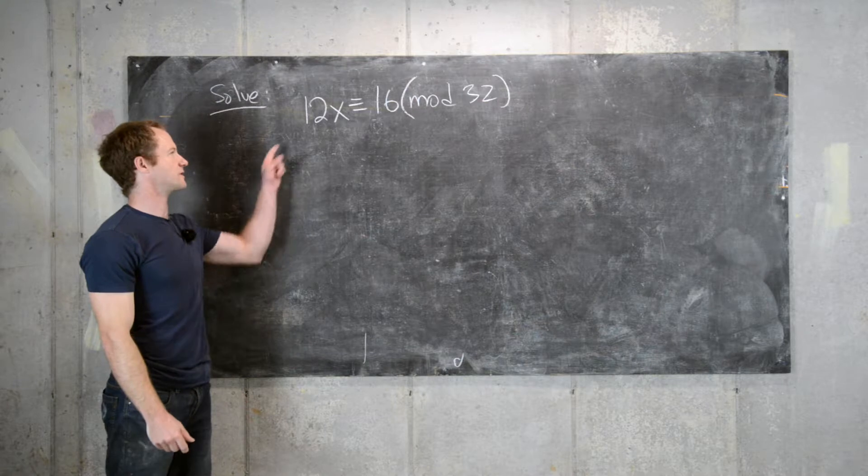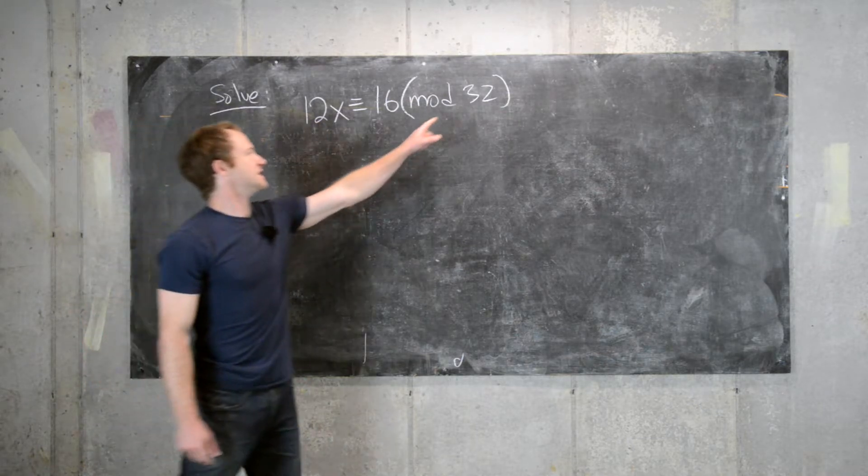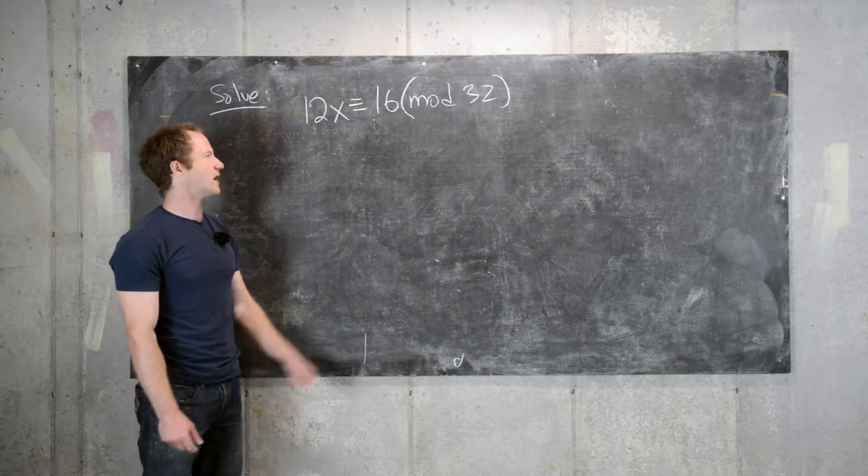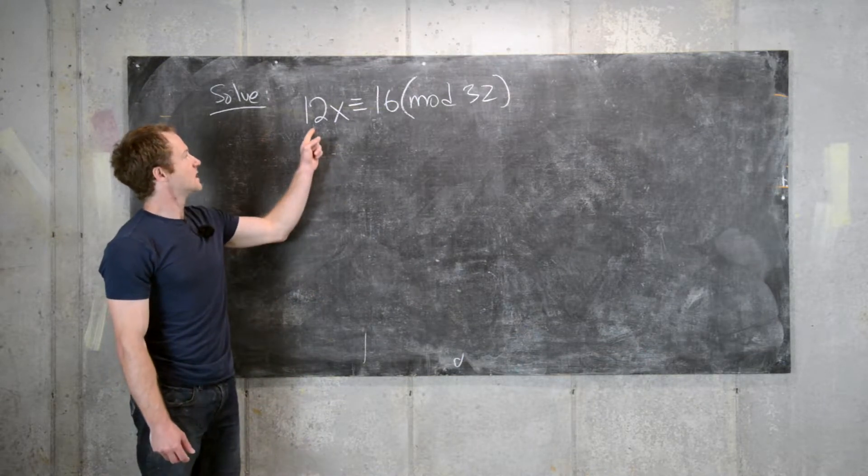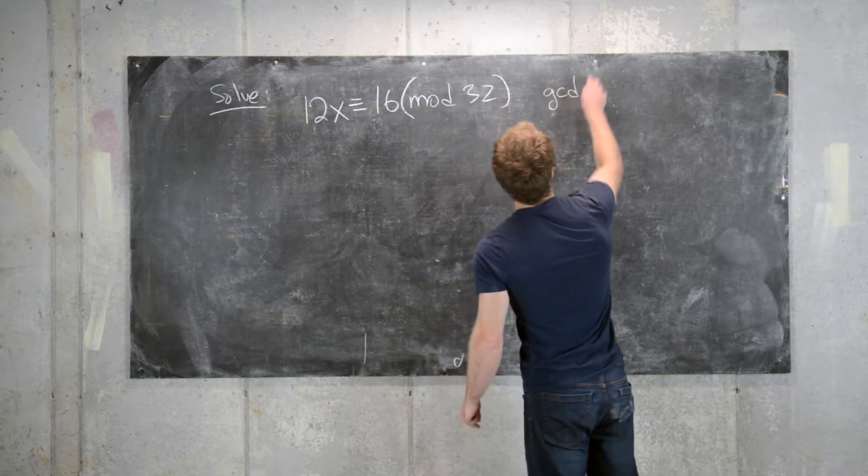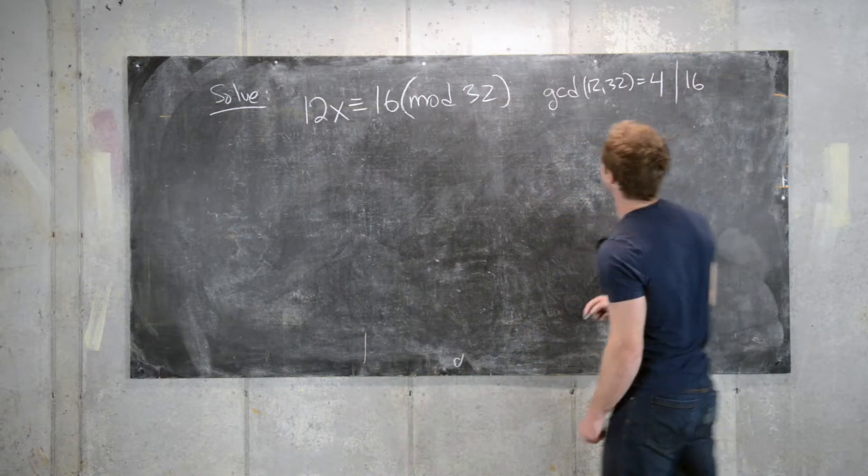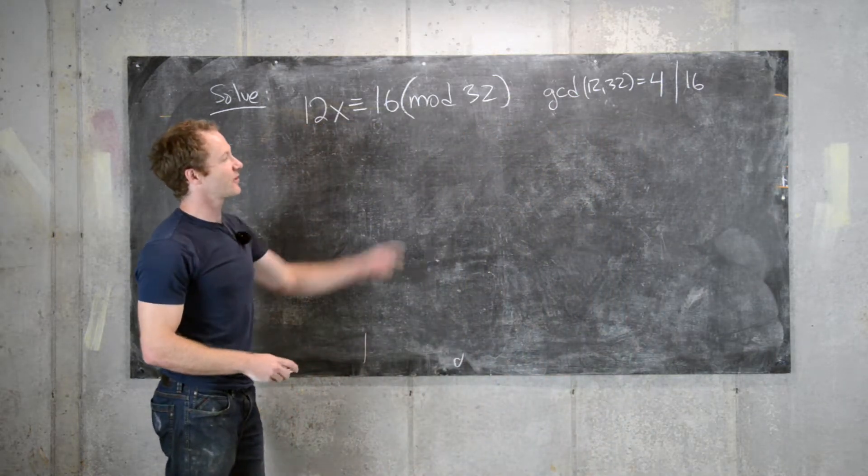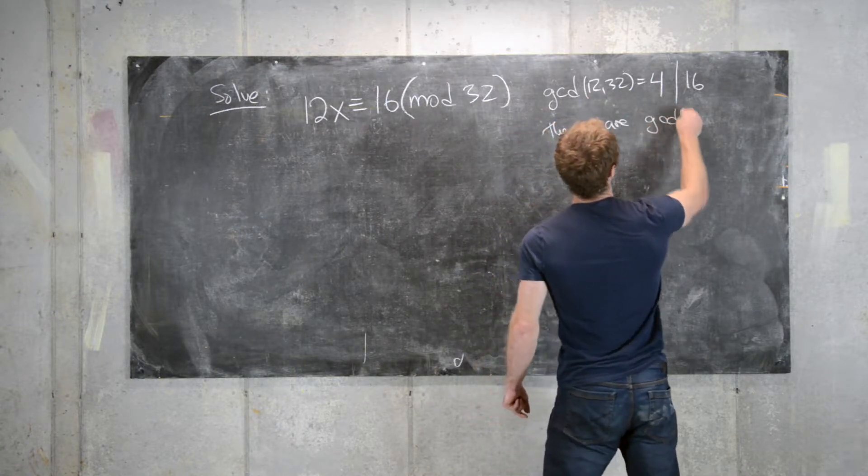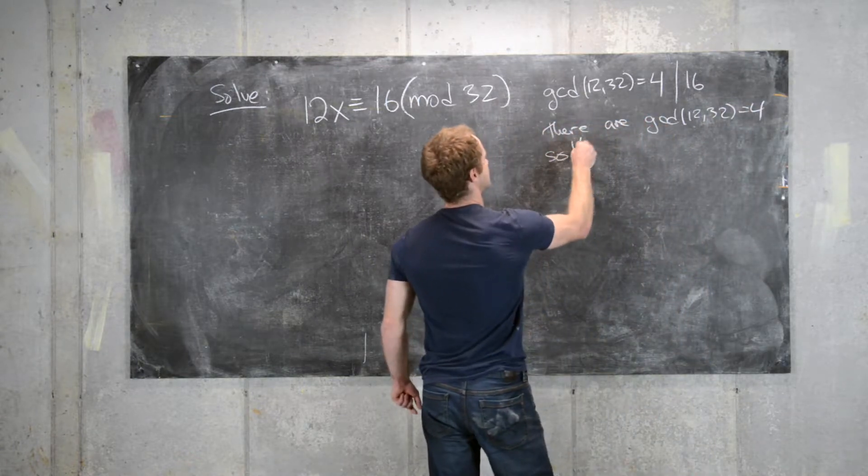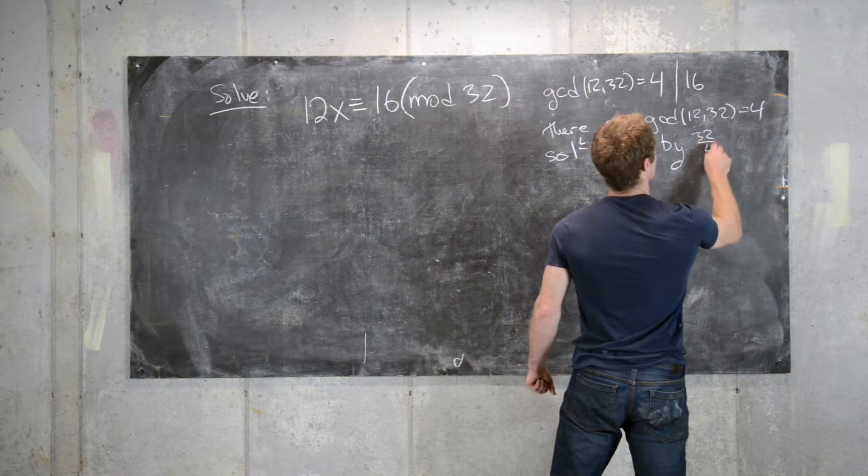So we'll look at the following linear congruence: 12x is congruent to 16 mod 32. So we'll talk through the strategies that were previously on the board. So 12 is not relatively prime to 32. In other words, their GCD is not 1, so we can't just find a multiplicative inverse of 12. But we see that the GCD of 12 and 32 equals 4 and 4 divides 16, so there is a solution. So that means we can continue. There is a solution. And furthermore, there are GCD of 12 and 32, so there are 4 solutions separated by 32 divided by 4, which equals 8.